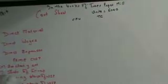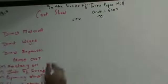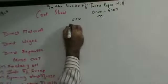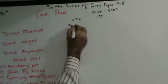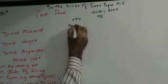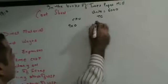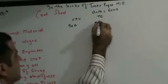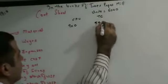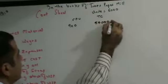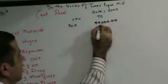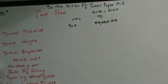CPU multiplied by units gives PC. 900 into 6,000: 6 nines are 54 with five zeros, so that's 54 lakhs.